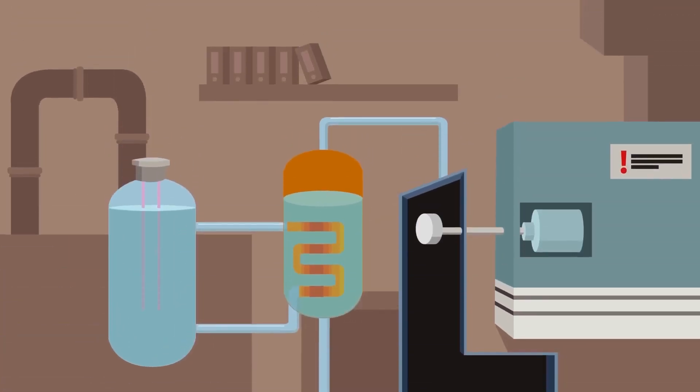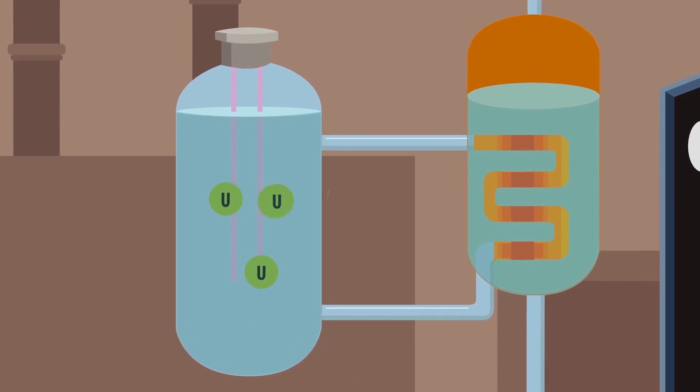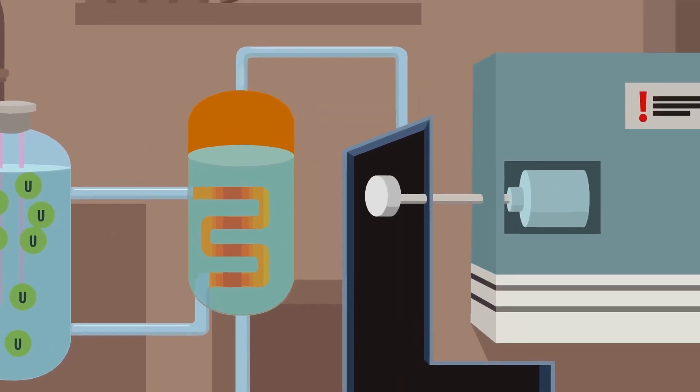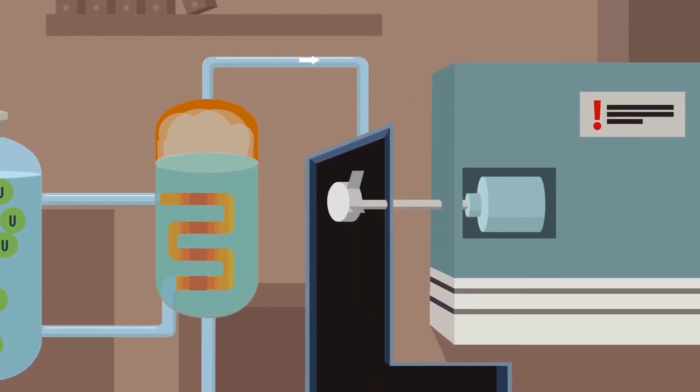So how does a nuclear reactor work? Uranium atoms are split in the reactor core, which is surrounded by water. The water is then pumped into the heat exchanger. Due to the enormous amount of heat produced during the fission reaction process, the surrounding water heats up, producing steam. This in turn is used to rotate the turbines, generating electricity.